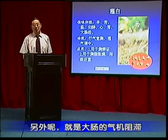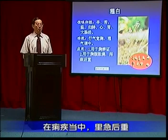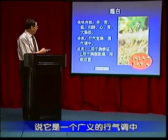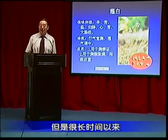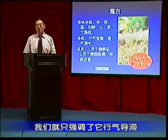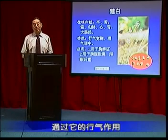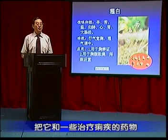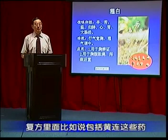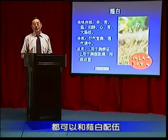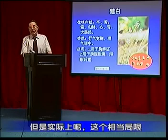另外就是大肠的气机阻滞，在痢疾当中里急后重。说它是一个广义的行气调中或者理气调中的药。但是很长时间以来，我们就只强调了它行气导滞，主要指的是用于痢疾的里急后重，把它和一些治疗痢疾的药物配伍，比如黄连这些药，都可以和薤白配伍。但是实际上，这相当局限。